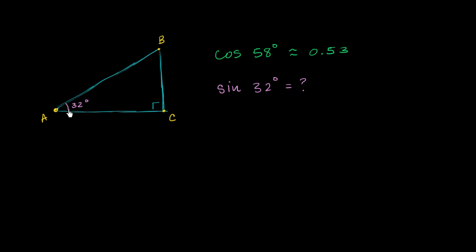So what plus 32 is equal to 90? Well, 90 minus 32 is 58. So this right over here is going to be 58 degrees. Well, why is that interesting? Well, we already know what the cosine of 58 degrees is equal to. But let's think about it in terms of ratios of the lengths of sides of this right triangle. Let's just write down SOHCAHTOA.